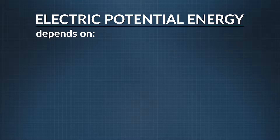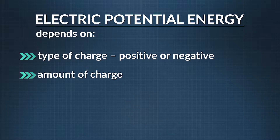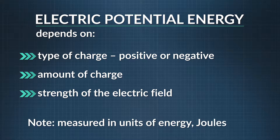Electric potential energy depends on three things: the type of charge, whether it's positive or negative; the amount of charge; and the strength of the electric field it's in. Electric potential energy uses the same units as gravitational potential energy — joules. We can figure out how much energy a system has by considering the electric charges and fields that are involved.